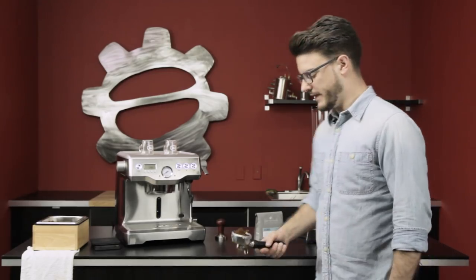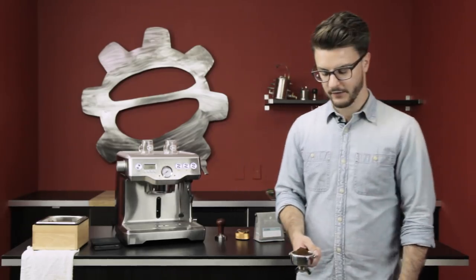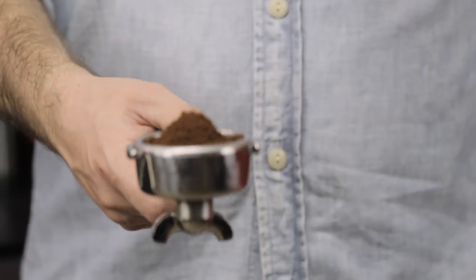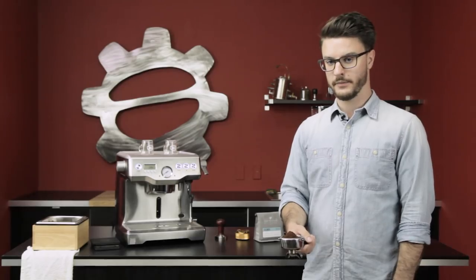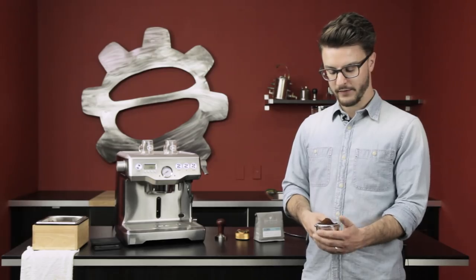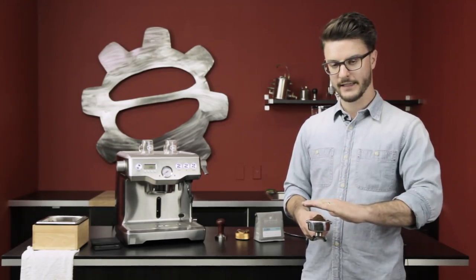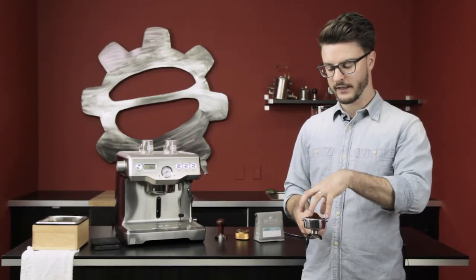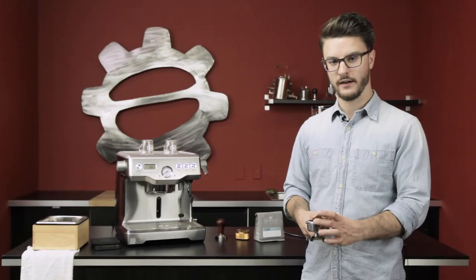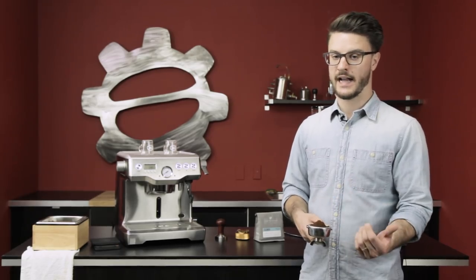So if you notice, I tried really hard to get that nice even pile in the center. That's kind of the start of good distribution. But now if I was to just tamp this, like I said before, this pile of coffee isn't going to magically move around. It's just going to get compacted where it is. And all that water is going to go to the outside edges. And I'm going to get over extraction out here and under extraction in the center. And I'll have a shot that's bitter and sour at the same time.